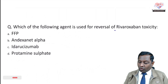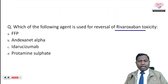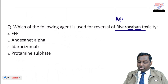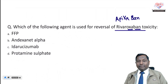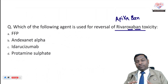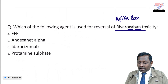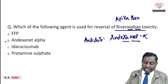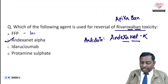Next question: which agent is used for reversal of rivaroxaban toxicity? Rivaroxaban is a factor Xa inhibitor — it blocks factor Xa. Apixaban is also a factor Xa inhibitor. For overdose of factor Xa inhibitors, the neutralizing antidote is andexanet alfa. Fresh frozen plasma is utilized mainly in warfarin toxicity.